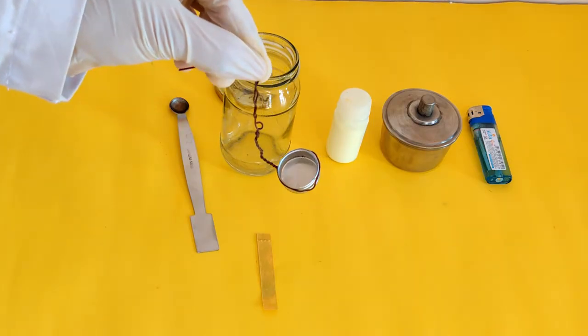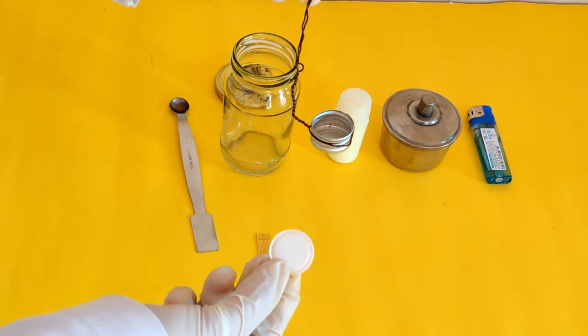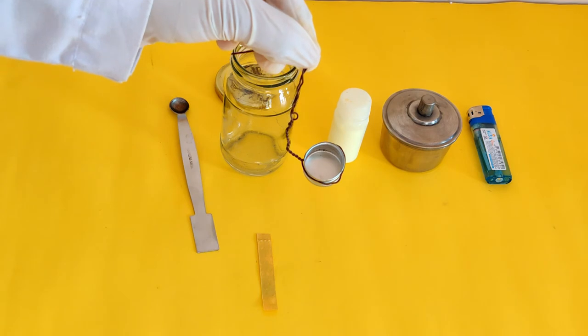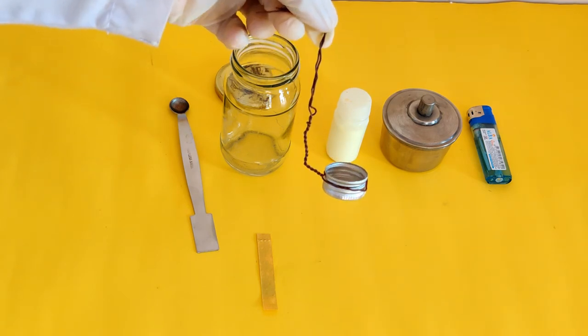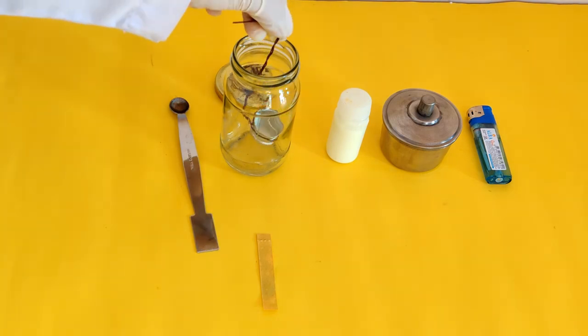Take an old medicine bottle or ink bottle cap made of metal to remove the rubber padding inside the metal cap. And tie a wire around it as shown, so that you can lower it into the glass jar.